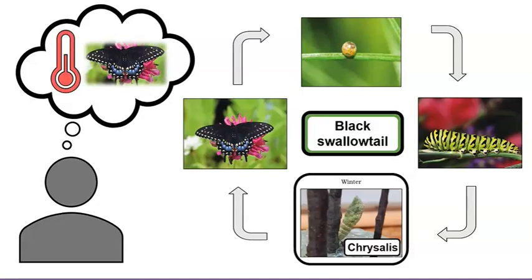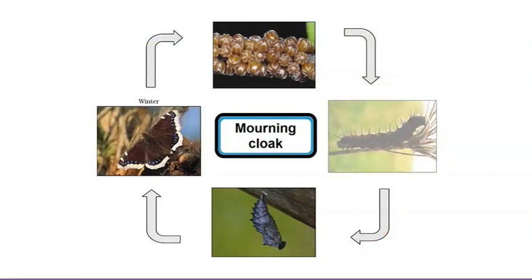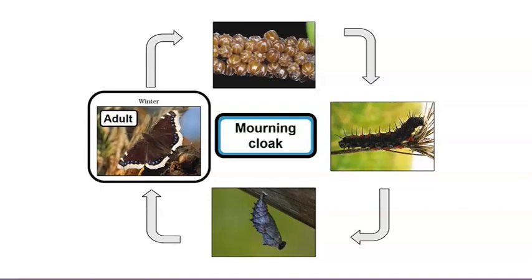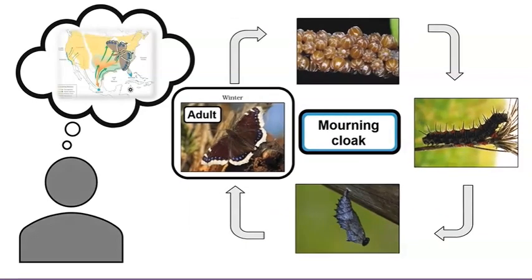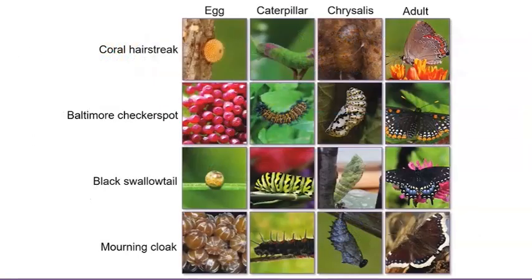Okay, one more butterfly. Here are the life stages of the morning cloak butterfly. Let's see what we can find out. What stage is this butterfly in during the winter? The morning cloak is in the adult stage in the winter. How do morning cloak butterflies survive the winter? Do you think these butterflies move around much during the winter? I like to see all these butterfly life cycle stages side by side. What do you notice about the life cycle stages of the four butterflies we observed?